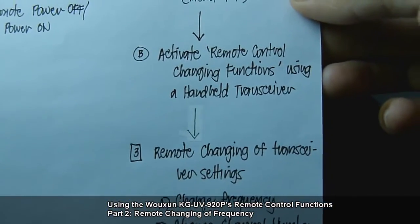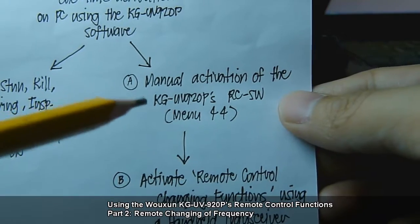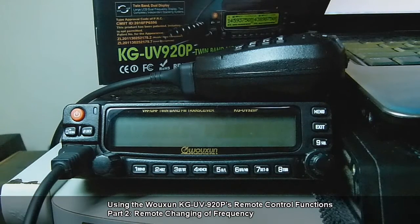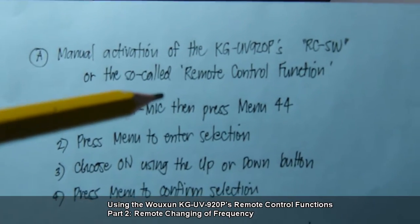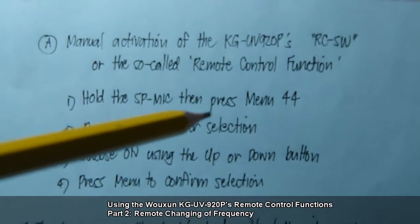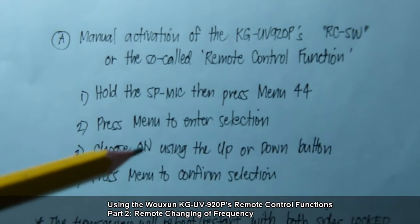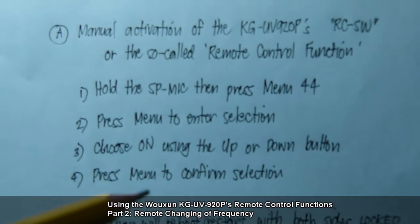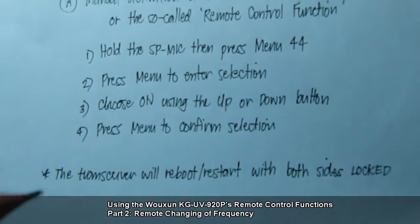For changing the frequency, manual activation of the KG-UV920P's RC-SW via menu 44 is required. You have to hold the SP mic of the KG-UV920P and then press menu 4-4. After that, press menu again to enter the selection, and from the options choose using either the up or down button, then confirm the selection by pressing menu. The transceiver will then reboot or restart with both sides locked.